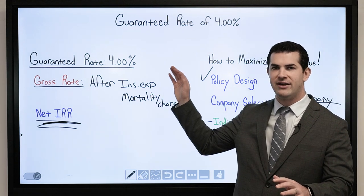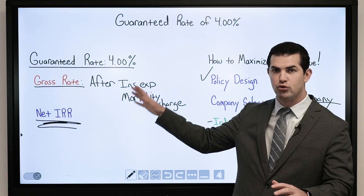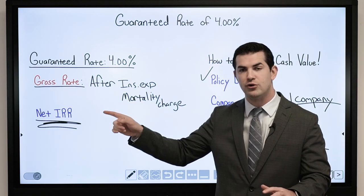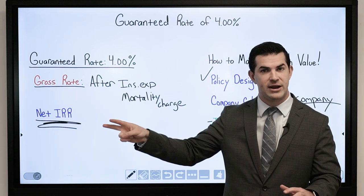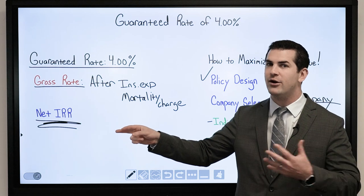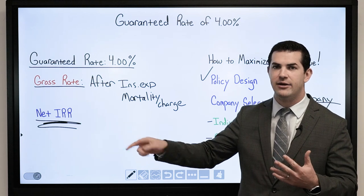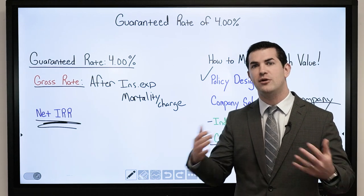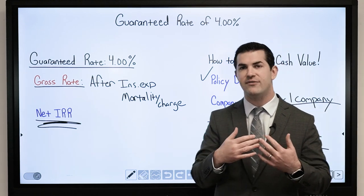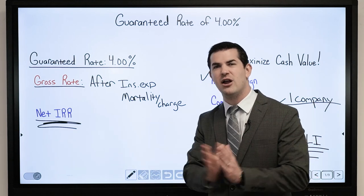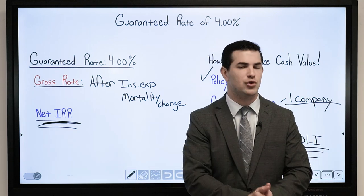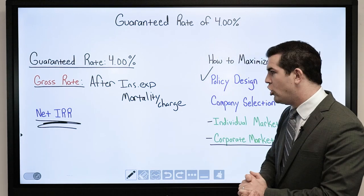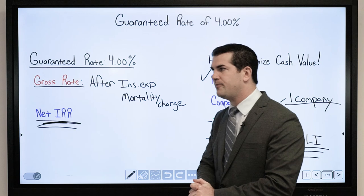I have the guarantee of 4% — it's a gross rate credited after insurance expenses and mortality charges. So if you ask why am I not earning 4%, it is a life insurance policy — I am still purchasing the life insurance benefit, no matter how much I minimize or reduce those insurance expenses.